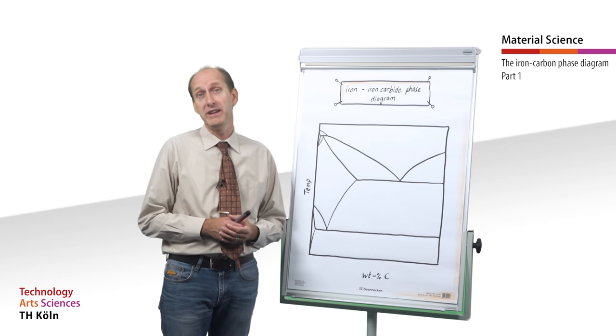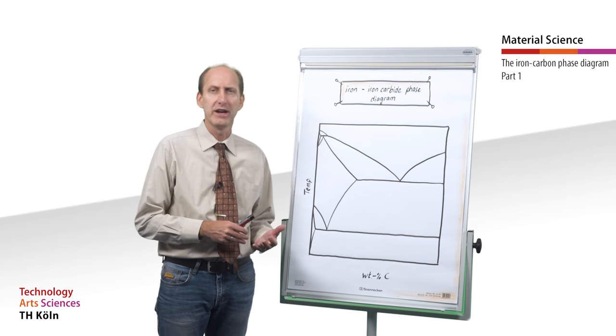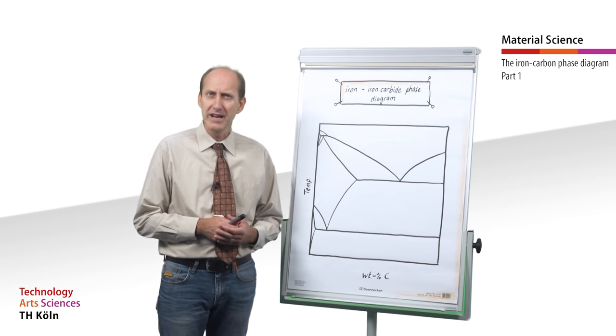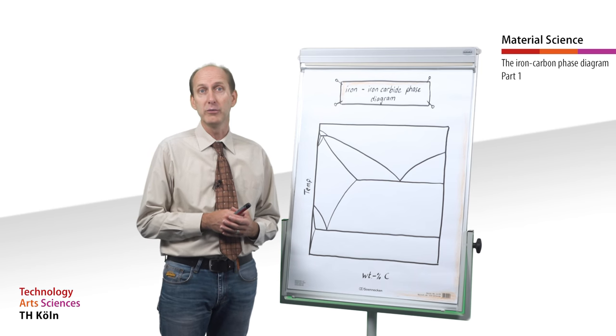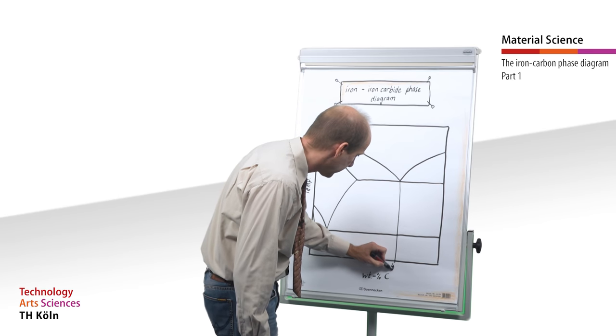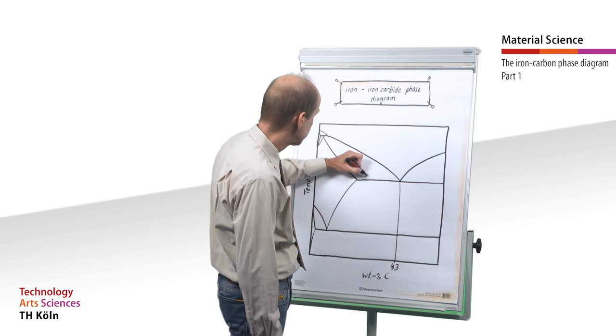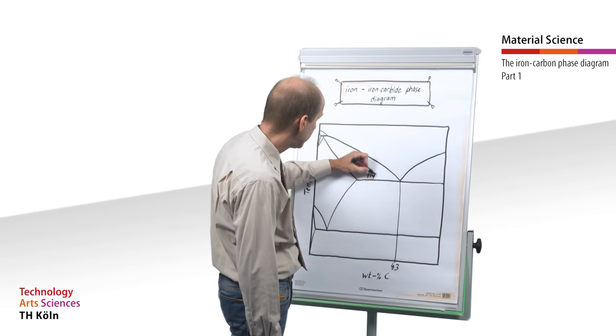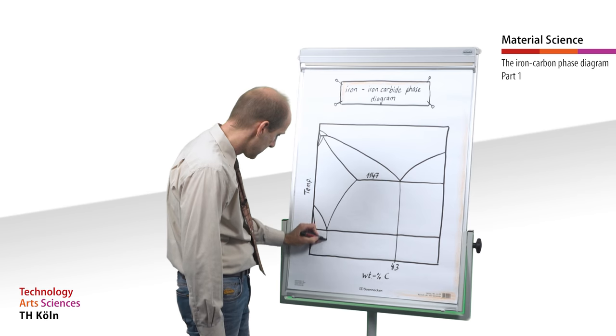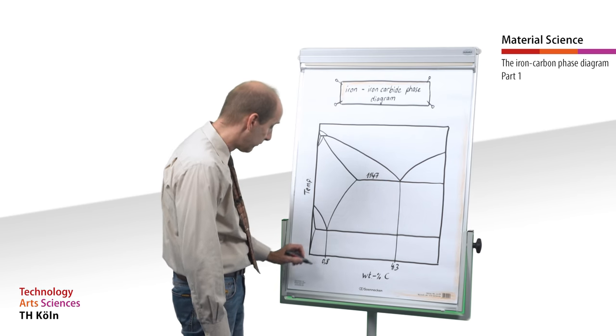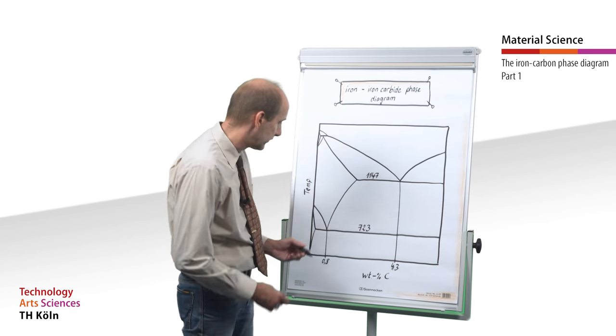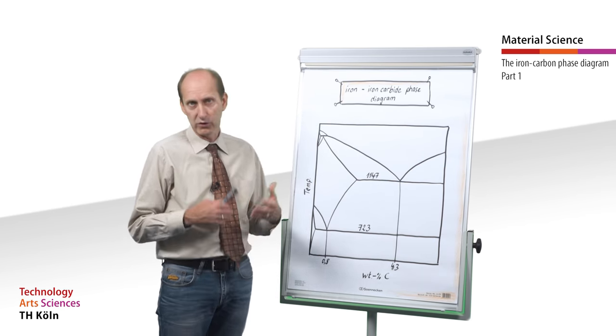As it may not be easy to remember all the names and numeric values of the iron-iron carbide phase diagram all at once, it might be helpful to remember the two value pairs for the eutectic system and 0.8% carbon at 723 degrees Celsius for the eutectoid point. This can provide you with some orientation.